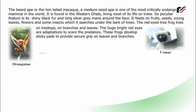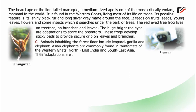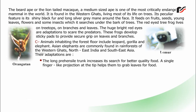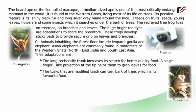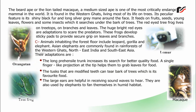The lion-tailed macaque feeds on fruits, seeds, young leaves, flowers, and some insects, which it searches for under the bark of trees. The red-eyed tree frog lives on treetops on branches and leaves — the huge bright red eyes are adaptations to scare predators, and these frogs develop sticky pads to provide a secure grip on leaves and branches. Animals inhabiting the forest floor include leopards, gorillas, and elephants. Asian elephants are commonly found in rainforests of the Western Ghats, Northeast India, and Southeast Asia. Their adaptations include a long prehensile trunk that increases their search for better quality food, a single finger-like projection at the tip to grab leaves, tusks that are modified teeth used to tear bark off trees, and large ears that are helpful for receiving sound waves and also used to fan themselves in humid habitat.